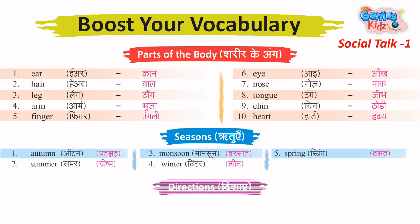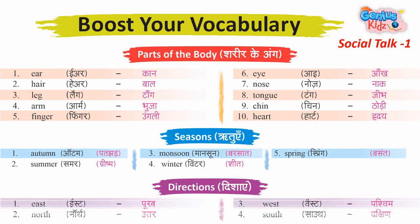Directions – Dishayin. 1. East – Poorab. 2. North – Uttar. 3. West – Paschim.